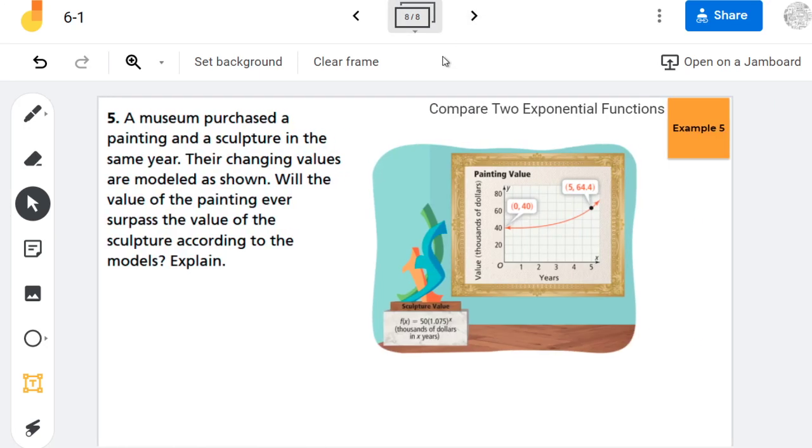Let's go ahead and let's try another example. In this case, they have the same problem with the same calculations we just did. But now it says their changing values are modeled as shown. Will the value of the painting ever surpass the value of the sculpture according to the models?